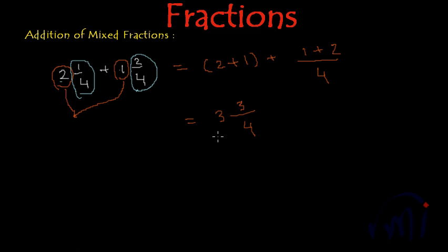So 2 plus 1 gives us 3 and if we add the numerators of these proper fractions, 1 plus 2 gives us 3 and then we write the denominator as it is. So 2 1/4 plus 1 2/4 actually gives us 3 3/4.